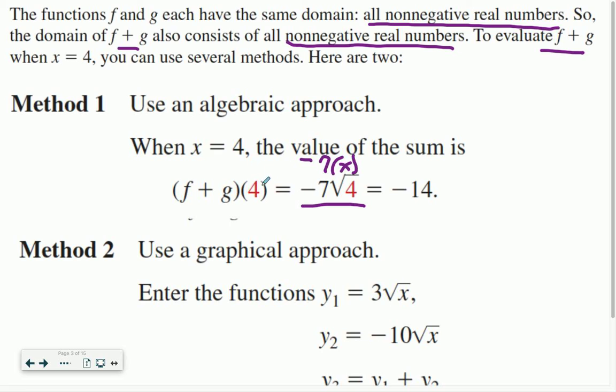This is what this equals. But if I'm going to plug in my 4 where my x is, I can find that the square root of 4 is 2. So negative 7 times 2 is negative 14. That was easy to use algebraically.